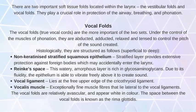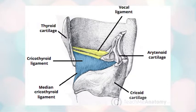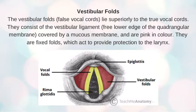The laryngeal folds: there are two important soft tissue folds located within the larynx — the vestibular folds and the vocal folds — which play a crucial part in the protection of the airway, breathing and phonation. The vocal cords, or true vocal cords, are the more important of the two sets; under the control of the muscles of phonation, they are abducted, adducted, relaxed and tensed to control the pitch of sound created. Histologically, their structure from superficial to deep is: non-keratinized stratified squamous epithelium, Reinke's space, vocal ligament, and vocalis muscle. The vestibular folds, or false vocal cords, lie superiorly to the true vocal cords; they consist of the vestibular ligament and free lower edge of the quadrangular membrane, covered by mucous membrane and are pink in color. They are fixed folds which act to provide protection to the larynx.